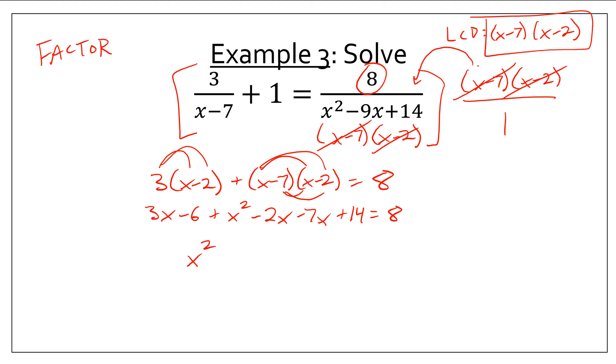So, let's combine the like terms. I have 3x minus 2x. That's 1x minus 7x is negative 6x. I have negative 6 plus 14. That's 8. But then, aren't I going to be subtracting 8? So, I think actually all the numbers here will cancel, which is nice. So, this equals 0.